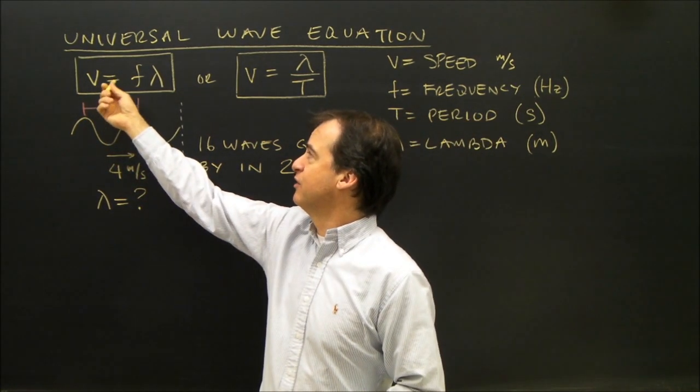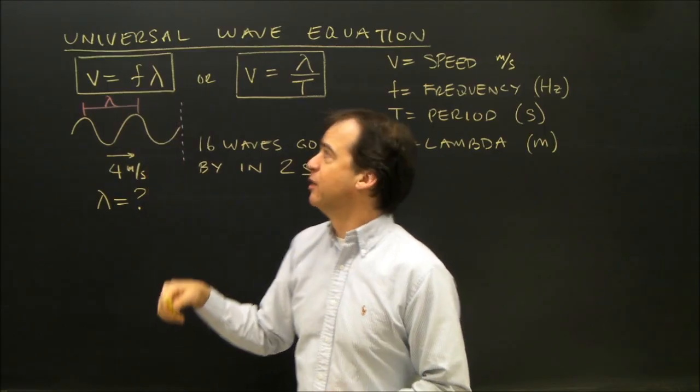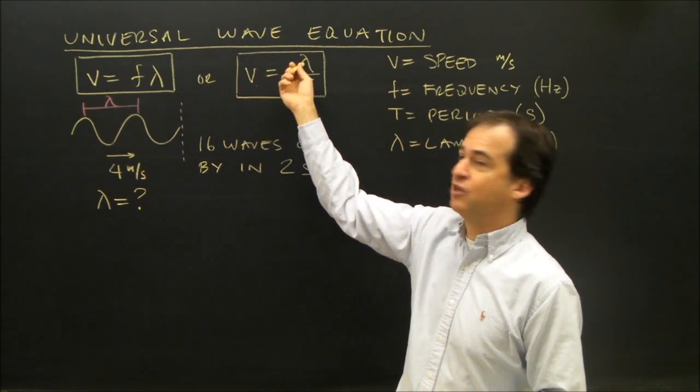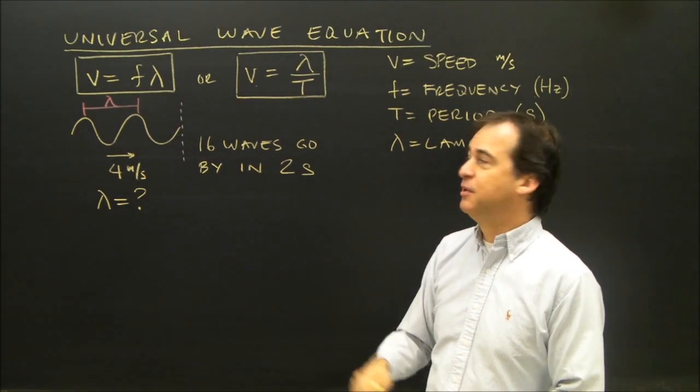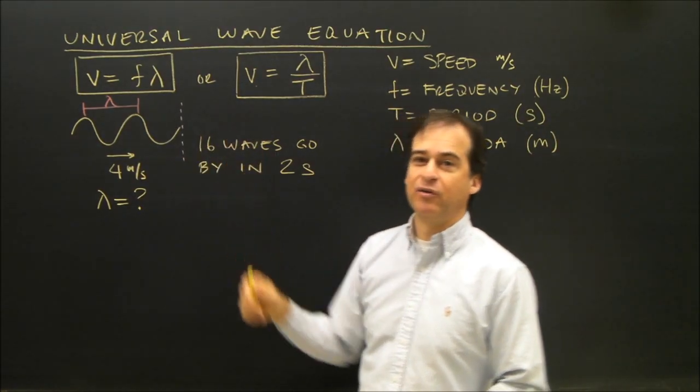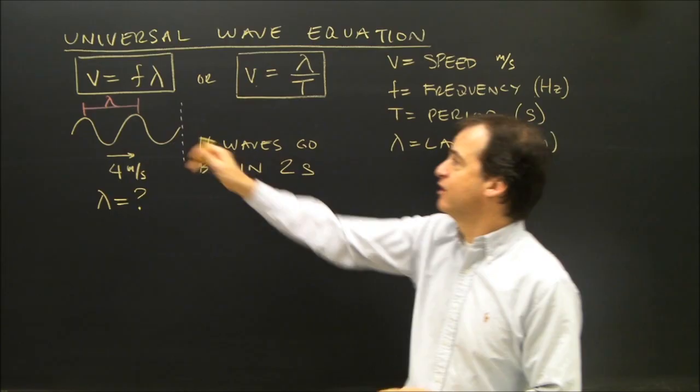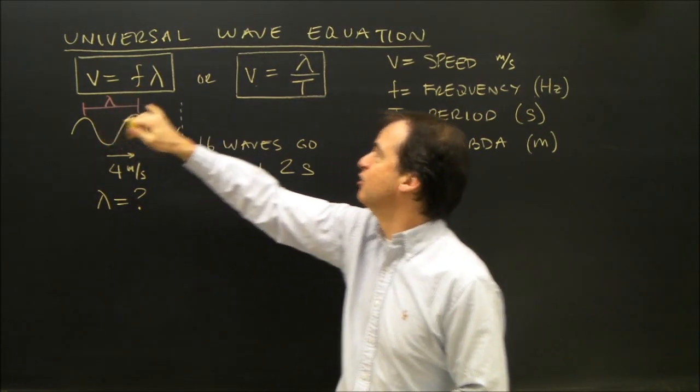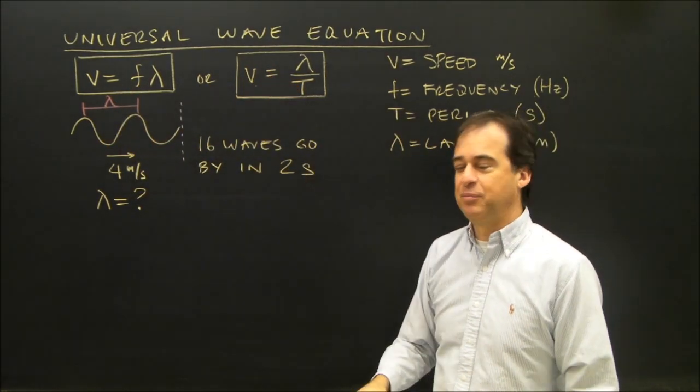So the speed of the wave is F lambda, F times lambda, or V is equal to lambda divided by T, T being the period in seconds. And we know that frequency and period are related. Frequency is one over period. That's why this formula has frequency in the numerator and this one has period in the denominator.